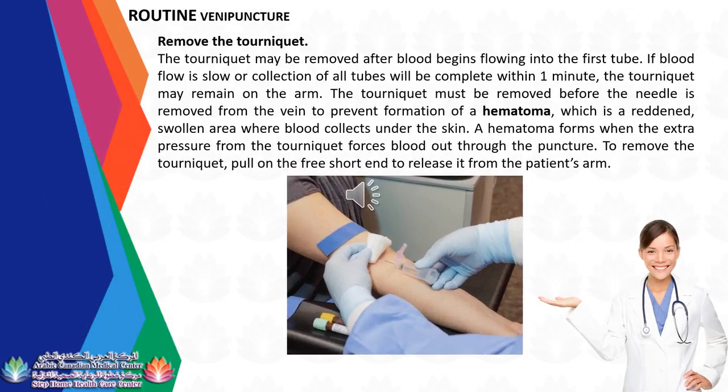Remove the tourniquet. The tourniquet may be removed after blood begins flowing into the first tube. If blood flow is slow or collection of all tubes will be complete within one minute, the tourniquet may remain on the arm. The tourniquet must be removed before the needle is removed from the vein to prevent formation of a hematoma — a reddened, swollen area where blood collects under the skin. A hematoma forms when the extra pressure from the tourniquet forces blood out through the puncture. To remove the tourniquet, pull on the free short end to release it from the patient's arm.